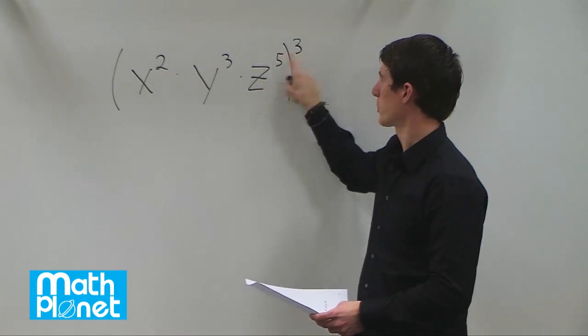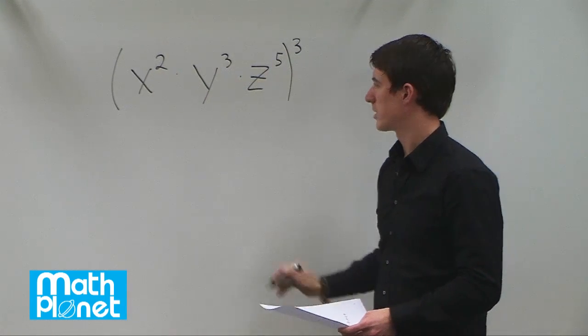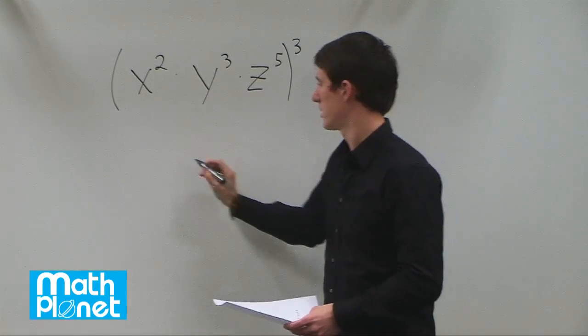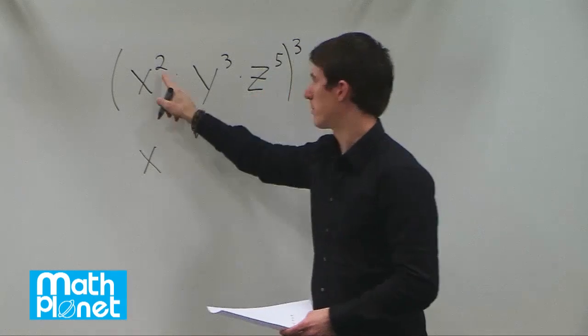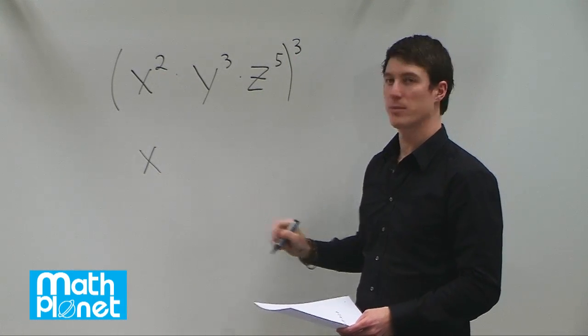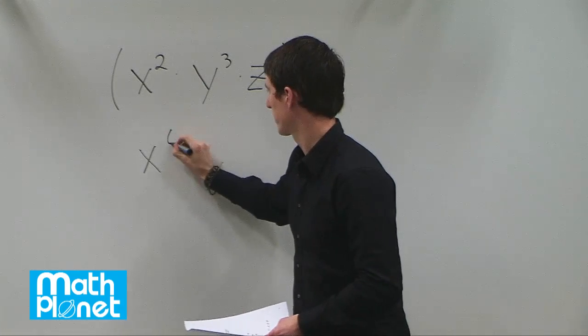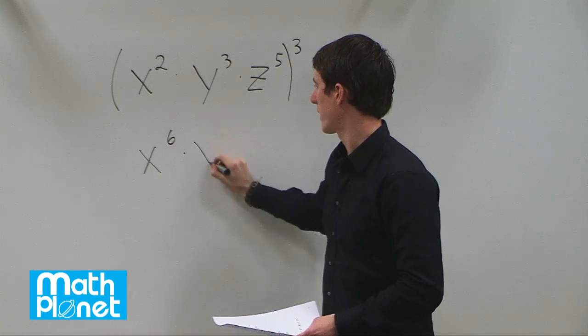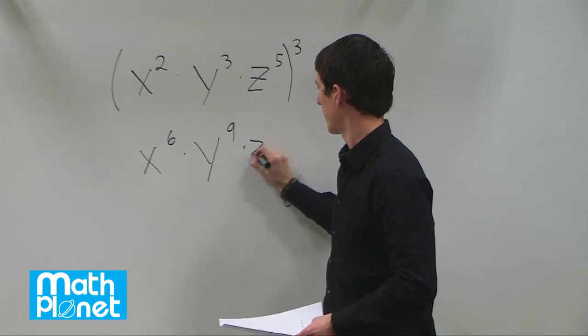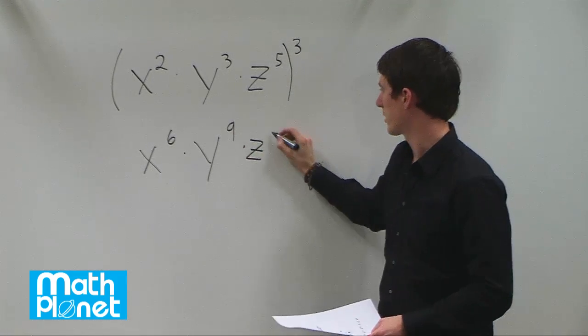So you have 3 times 2 here, 3 times 3 here and 3 times 5 here. So we have the same number of factors x, y and z but we need to multiply each of these indices by this higher ordered power here. So 2 times 3 is 6 and then y, 3 times 3 is 9 and z, 5 times 3 is 15.